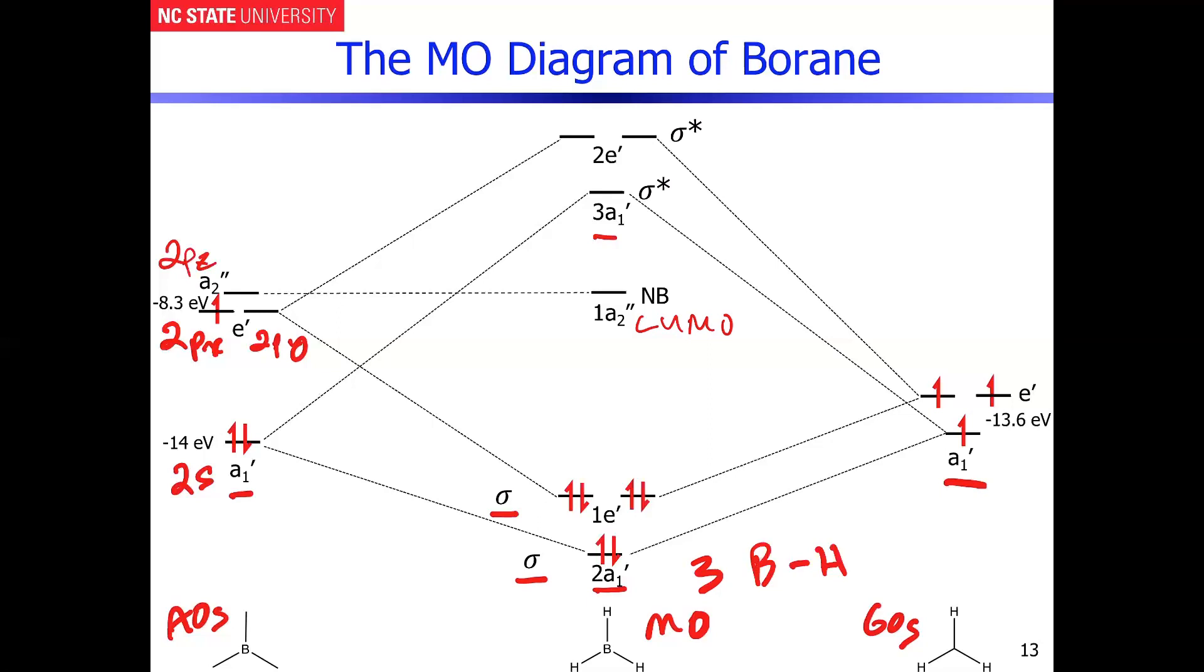The corresponding anti-bonding orbitals are lying up where I'm showing them in A1' and E'. And then if we look at the final shapes of all the different MOs that we constructed, the A1' is totally symmetric, and that's giving us a completely in-phase pattern. I put the E' slightly higher in energy because the overlap is not as strong as it is in the A1', but there's another reason.